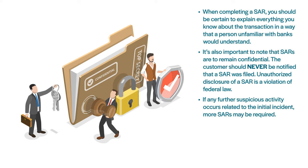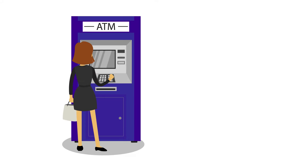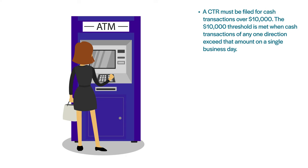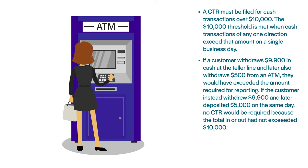If any further suspicious activity occurs related to the initial incident, more SARs may be required. Another kind of mandatory BSA reporting is currency transaction reporting, or CTR. A CTR must be filed for cash transactions over $10,000. The $10,000 threshold is met when cash transactions of any one direction exceed that amount on a single business day. For instance, if a customer withdraws $9,900 at the teller line and later withdraws $500 from an ATM, they would have exceeded the reporting threshold. However, if they withdrew $9,900 and later deposited $5,000 on the same day, no CTR would be required because the total in or out had not exceeded $10,000.